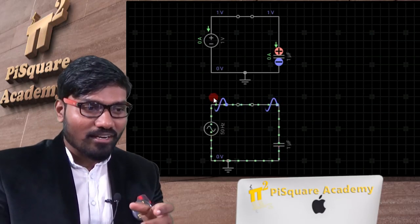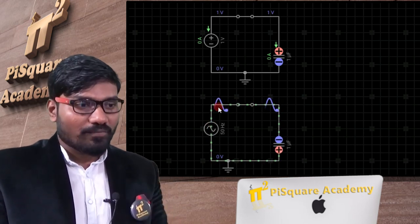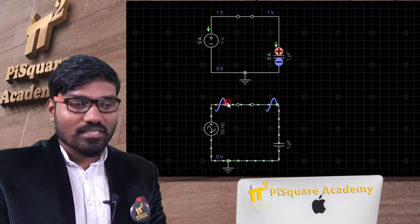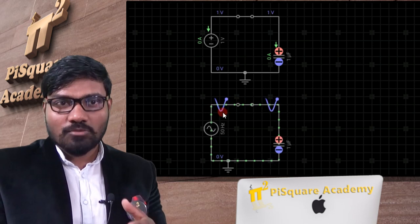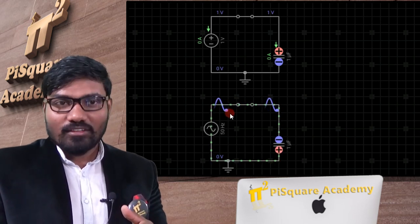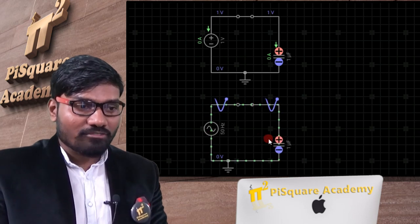Not only the sinusoidal, any alternating quantity, symmetrical quantity cannot be stored. Because positive and negative both are symmetric. If positive is having some average value, negative is having some average value. Both are same. So the complete energy stored is zero because the source itself is discharging.